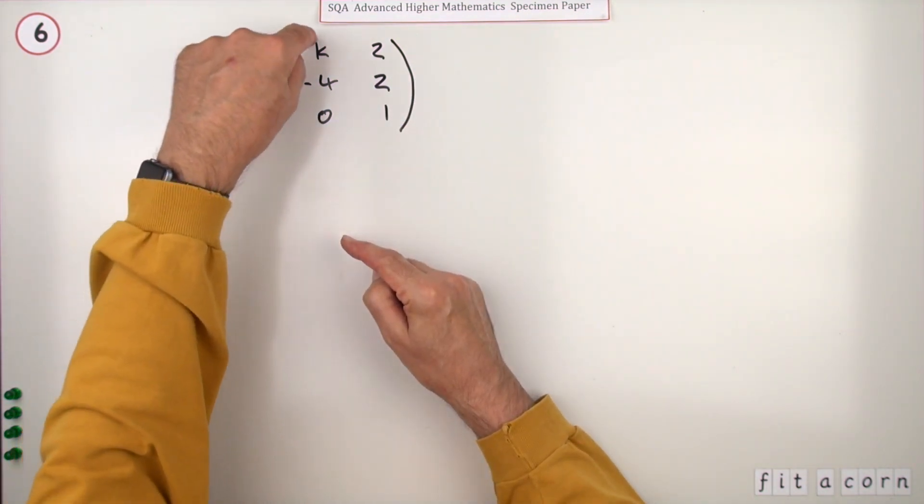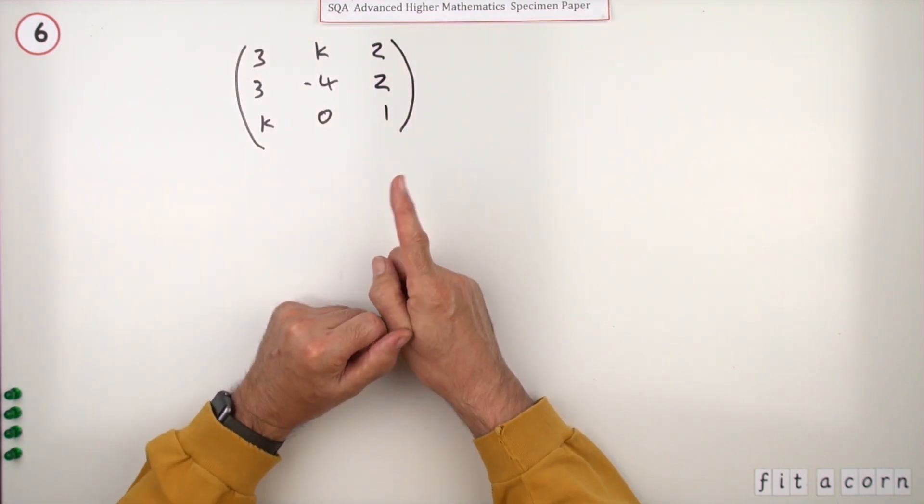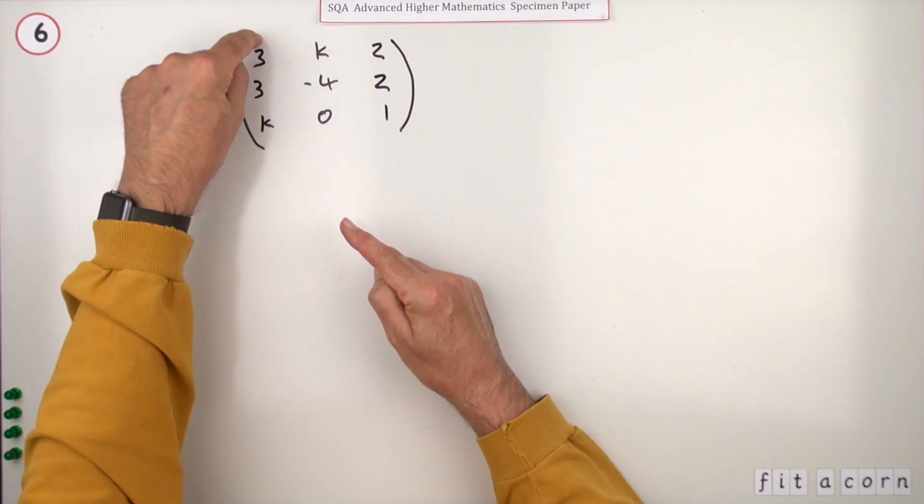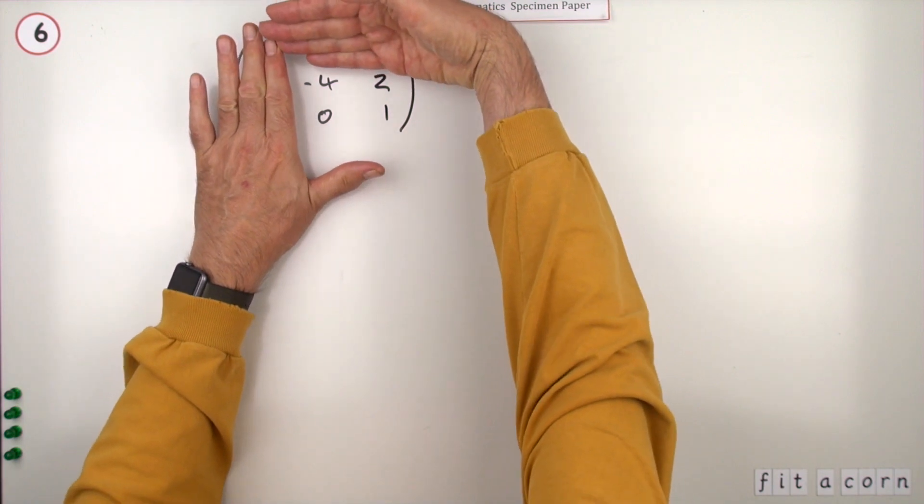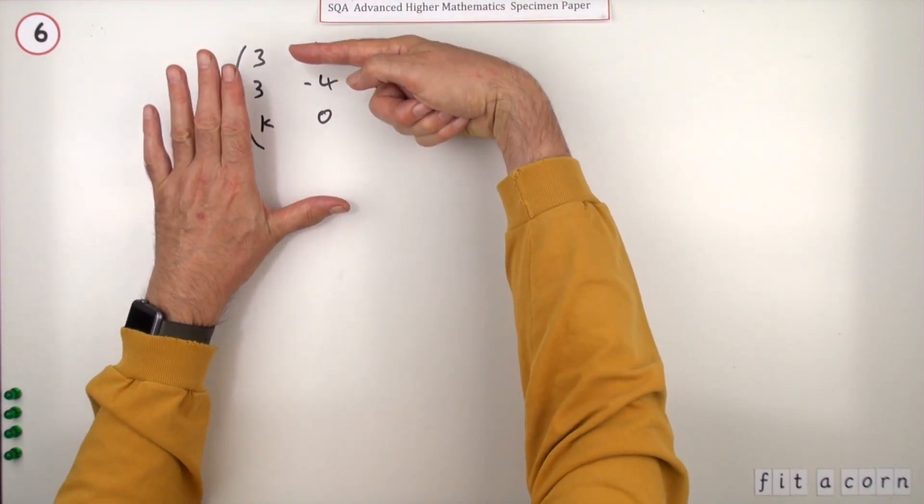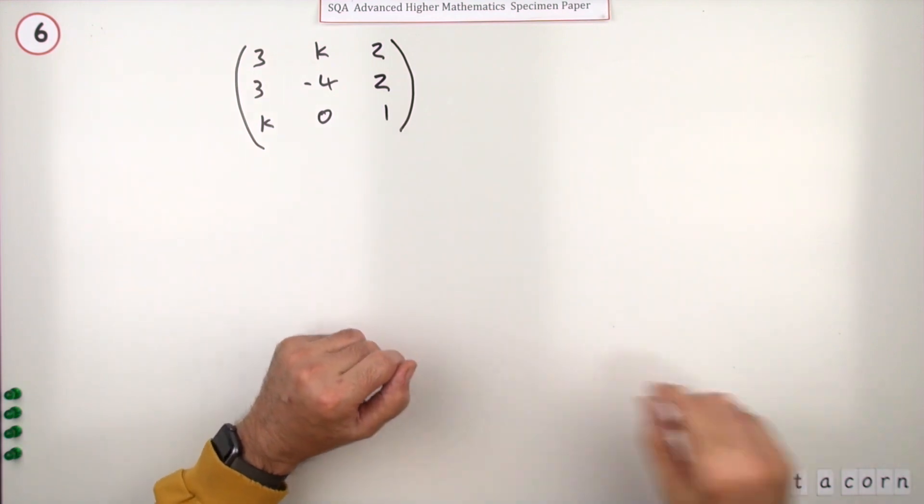But no matter which row or column you decide to use, what happens is it's the sum of the three entries in whichever part, multiplied by their signed minors. The minor for each entry is the little 2x2 matrix that you're left with when you exclude the row and column including the entry, and signed because...